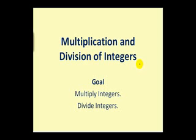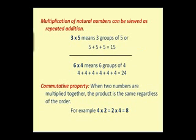Welcome to a lesson on the multiplication and division of integers. Let's start by talking about some preliminary ideas. First, the multiplication of natural numbers can be viewed as repeated addition. For example, we can view 3 times 5 to mean 3 groups of 5, or 5 plus 5 plus 5, which equals 15.